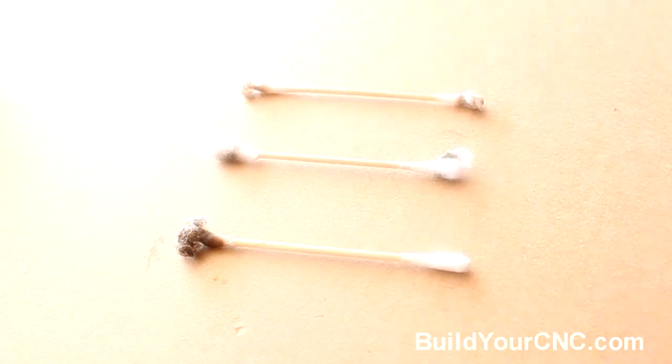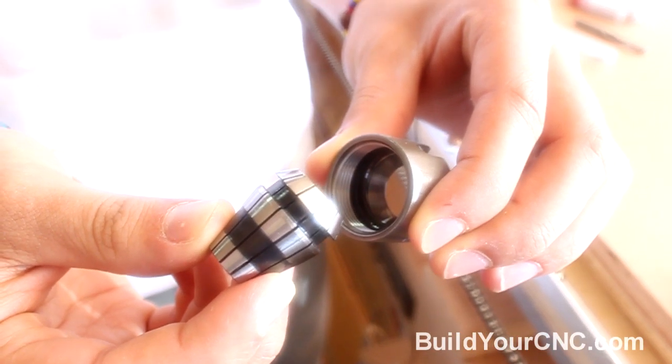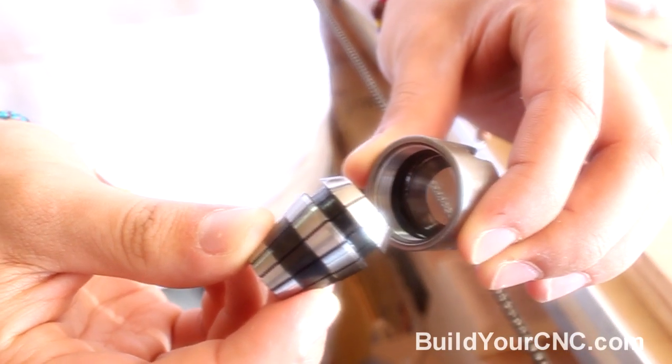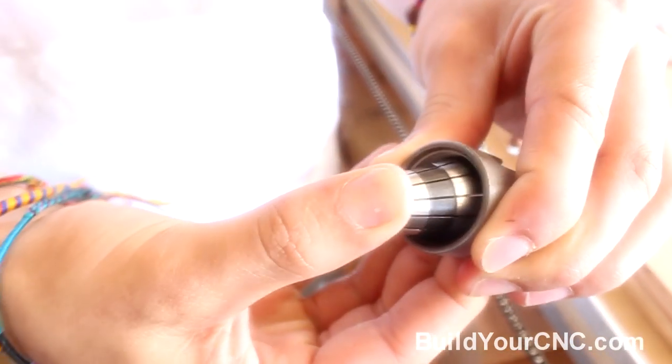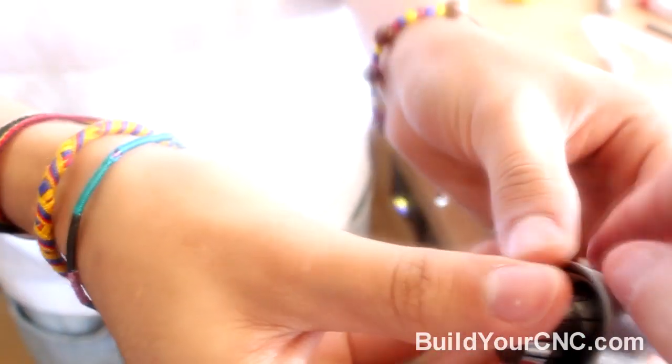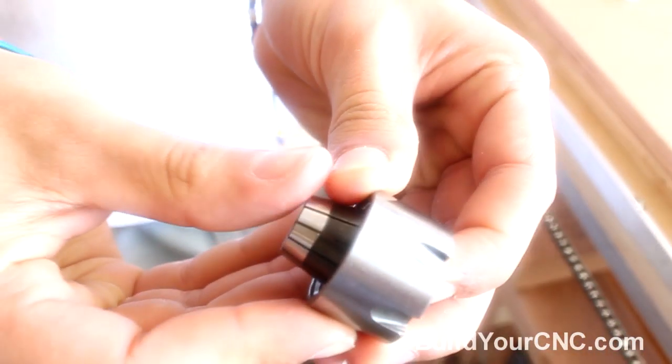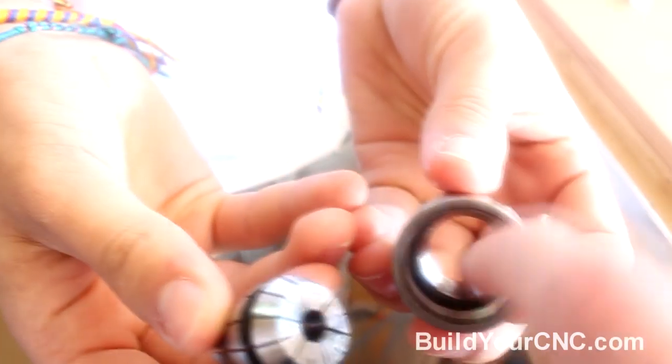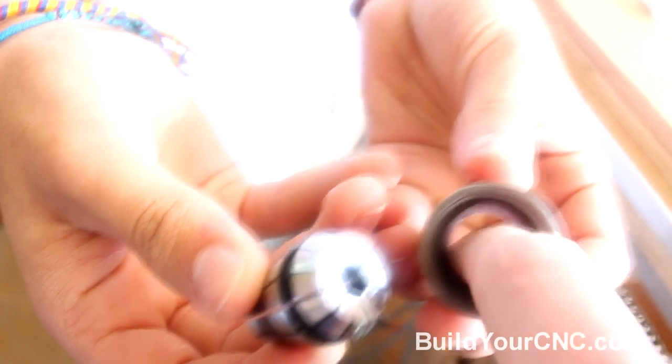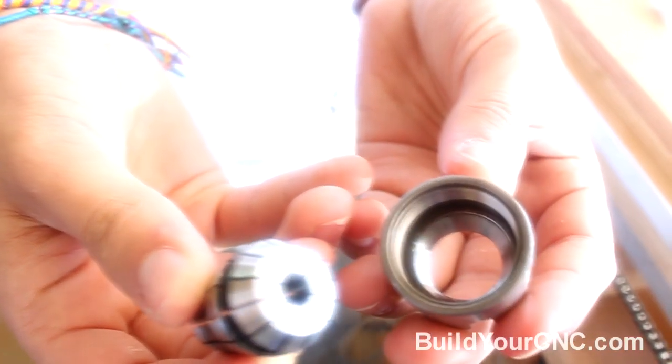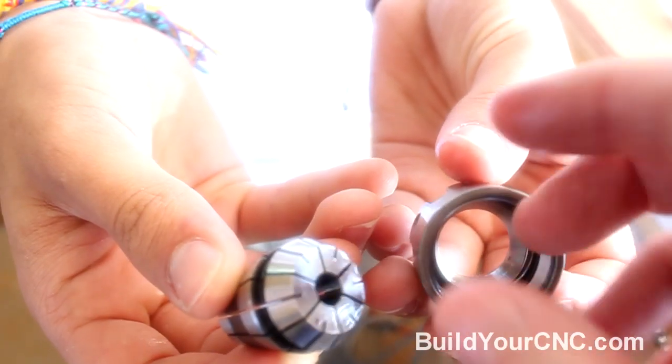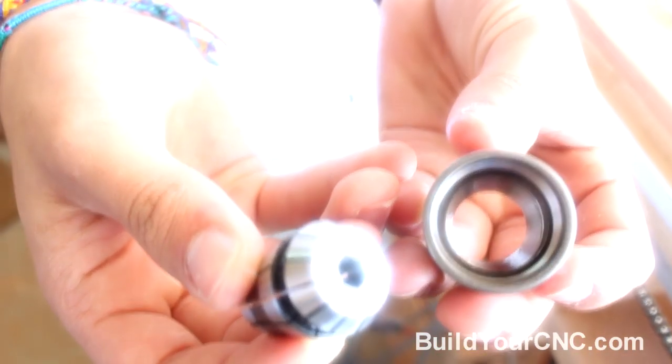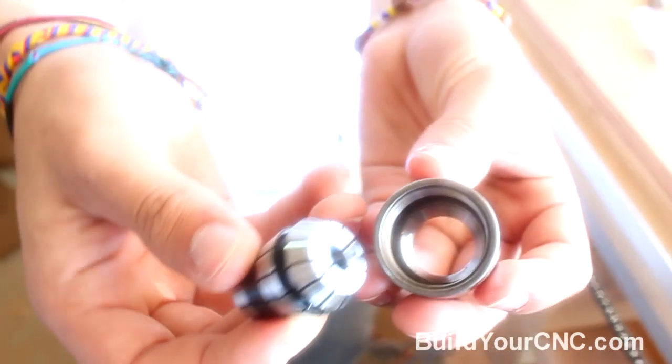To put the collet back into the collet nut you have to put it in at an angle and then push down. To take it out you use your thumb or your index finger and push it to one side and then you push it out. There's the ring inside of there that it connects to so you have to do it on an angle which is much easier. You can't put it straight in and try to force it in. Let's go ahead and put this on the router.